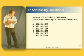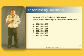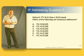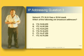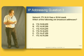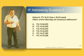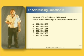This is a third type of IP addressing question we might get. The question says, Network 172.16.0.0 has a 20-bit mask, which of the following are broadcast addresses? And then we've got a list of addresses that could be possible broadcast addresses.